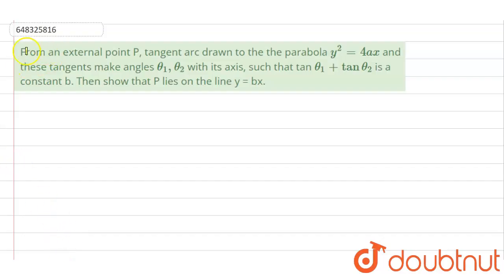Hello everyone, let's start the question. From an external point P, tangents are drawn to the parabola y² = 4ax, and these tangents make angles θ₁ and θ₂ with its axis such that tan θ₁ + tan θ₂ is a constant b. Then show that P lies on the line y = bx.